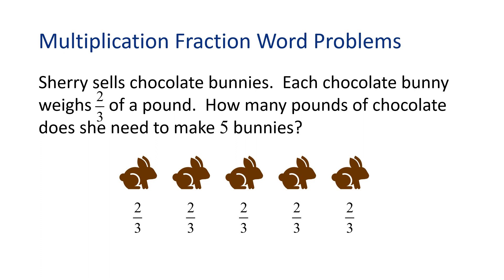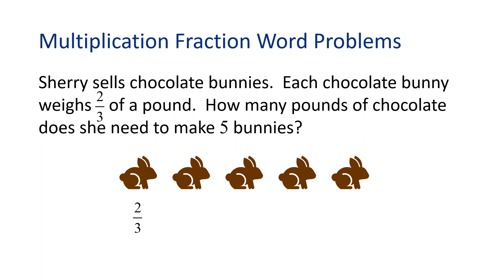We can use repeated addition to find out how many pounds of chocolate is needed, but that looks like a lot of work. Instead, we can use multiplication: two-thirds of a pound of chocolate times five chocolate bunnies. To multiply a fraction by a whole number, write the whole number as a fraction with one in the denominator. Then we can multiply straight across. So five turns into the fraction five over one.